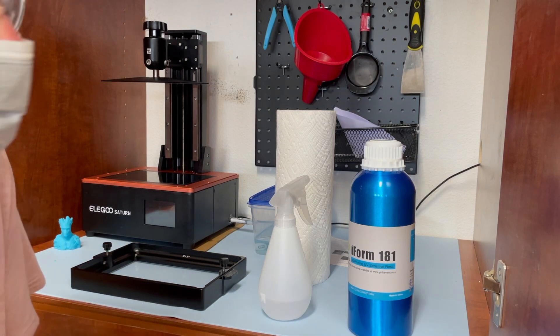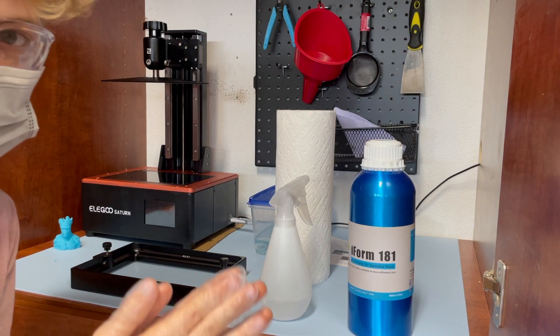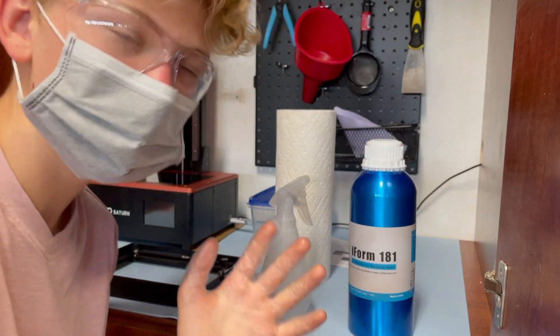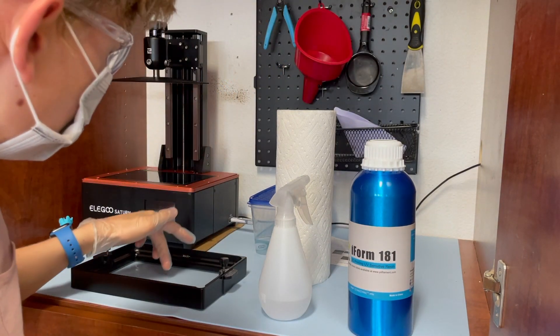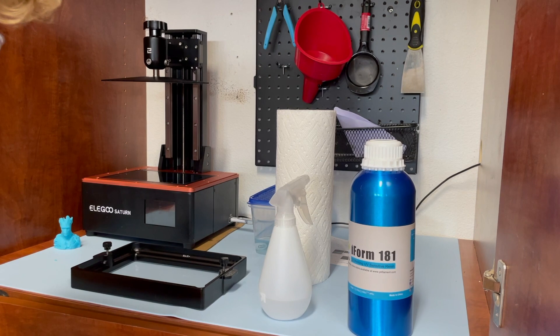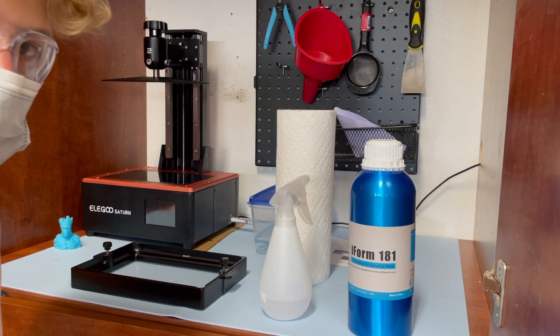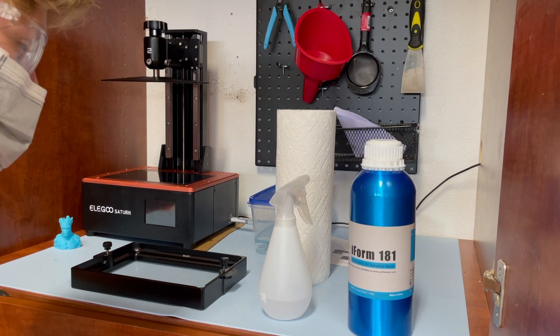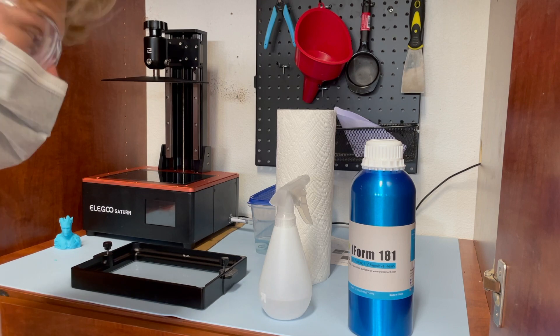And also, one massive, massive thing you do not want to do whatsoever is use your metal scraper to scrape off the vat. When I was first starting I was doing that, and I actually popped my FEP and resin got everywhere.